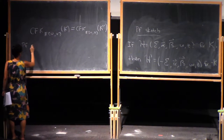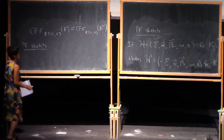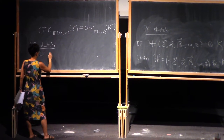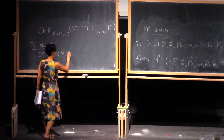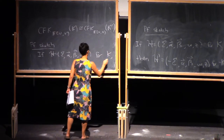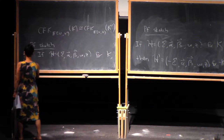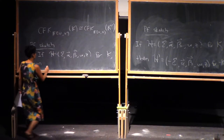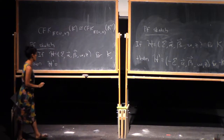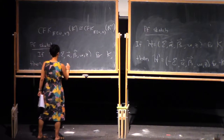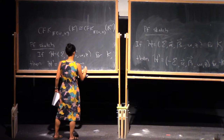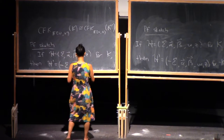Let's sketch the proof. Suppose we have a Heegaard diagram for K. To get the reverse of K, I'm going to reverse the orientation of sigma, switch alpha and beta, and then keep my base points in the same order.